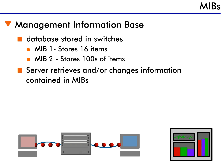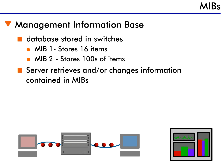MIB 2, on the other hand, has hundreds of files and can store information such as the switch's name, the switch's address, how many ports are in the switch, bridging information, routing information, traffic counters, errors detected, and so on.